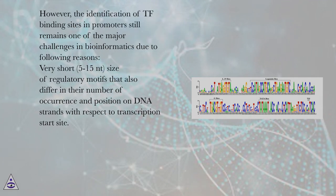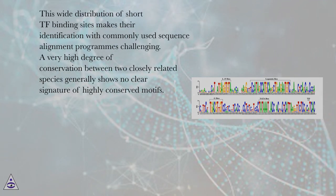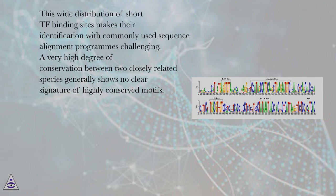However, the identification of TF binding sites and promoters still remains one of the major challenges in bioinformatics for the following reasons. The very short size — 5 to 15 nt — of regulatory motifs, which also differ in their number of occurrence and position on DNA strands with respect to the transcription start site. This wide distribution of short TF binding sites makes their identification with commonly used sequence alignment programs challenging.